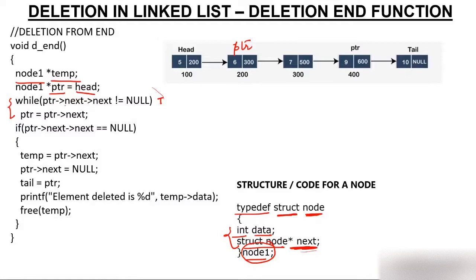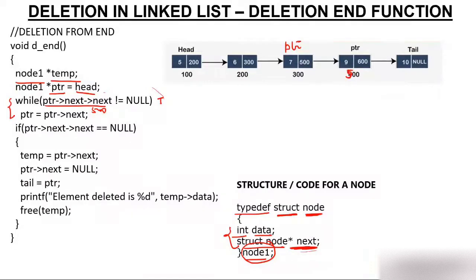We check again: PTR->next is 300, and next of 300 is 500, which is not null — condition true, so PTR moves to 300. Again: PTR->next is 500, and next of 500 is 600, which is not null — condition true, so PTR moves to 500. Note: a value written as 400 was a mistake; the correct value is 500.